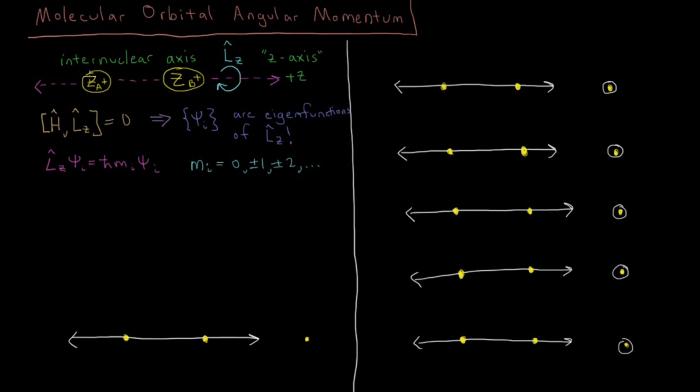We know that these atomic orbitals are overlapping to form our molecular orbitals, and those molecular orbitals are the eigenfunctions of our Hamiltonian or whatever approximate Hamiltonian we've defined. So they're eigenfunctions of the Hamiltonian, therefore they're also eigenfunctions of LZ.